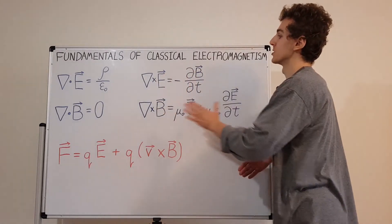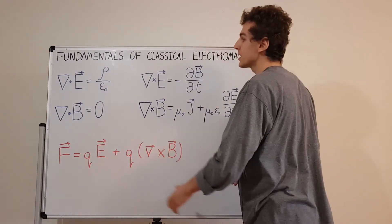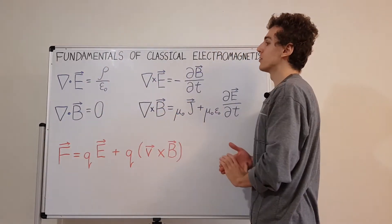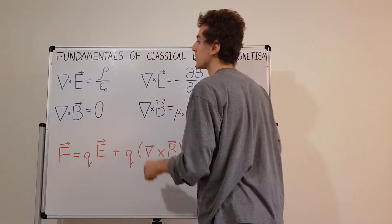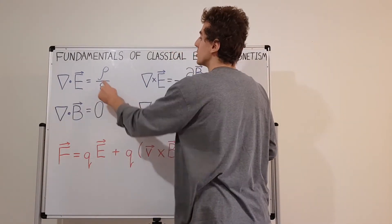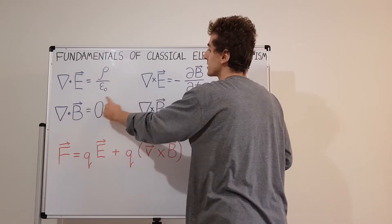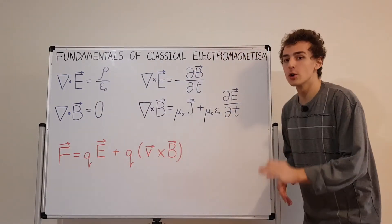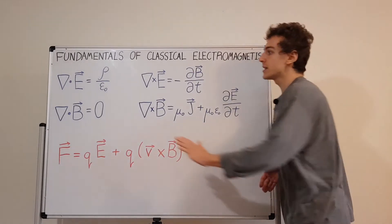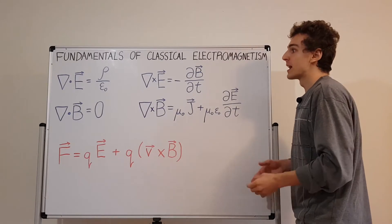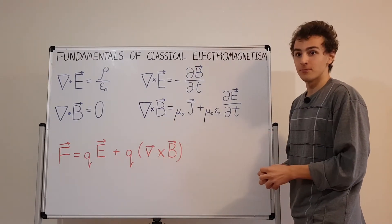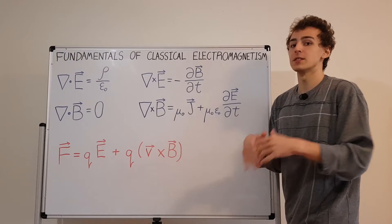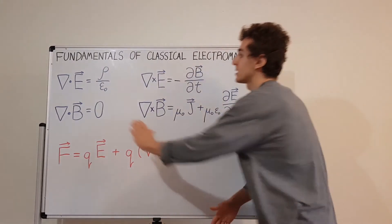Let's talk more about these blue equations — they are Maxwell's equations. The one in the top left is Gauss's law for electric fields, sometimes just abbreviated to Gauss's law. It says that the divergence of the electric field is due to the charge density. This constant down here is the permittivity of free space, and the charge density tells you how much charge there is per unit volume in a region of space. So the source of electric fields is charges — that's what Gauss's law is saying.